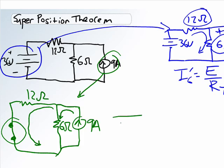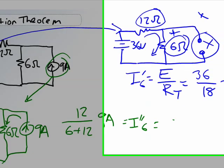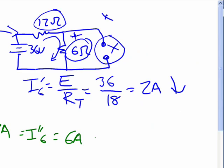So, according to the current divider rule, it's 6 plus 12 times 9-amp. We're looking for I double prime 6. So the 6 is the 1, not the 1, it's 12. So 12 divided by 18 times 9 is going to equal 6-amps. In which direction is this thing going? It is going down.